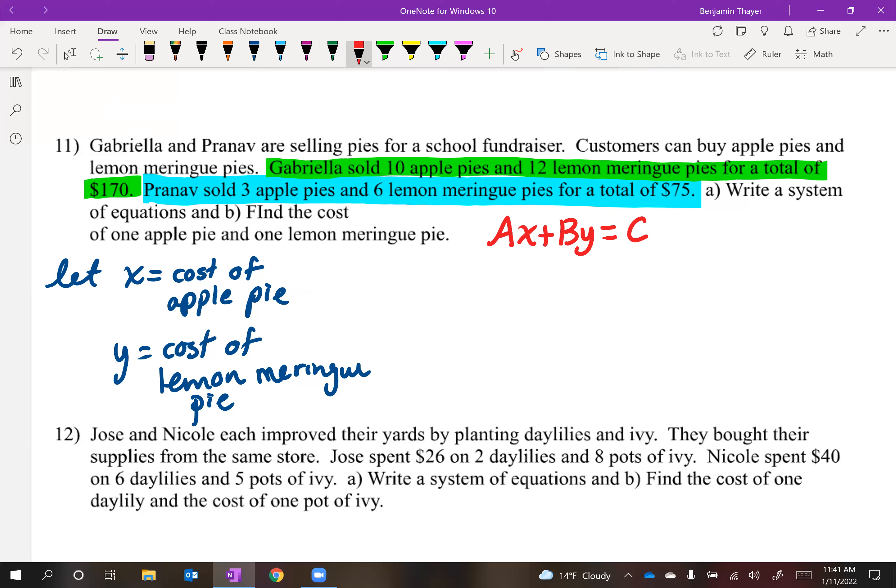And welcome back. Let's take a look at the green equation. How about 10x plus 12y equals 170? How about the blue equation? 3x plus 6y equals 75. You've got your system of equations in standard form.